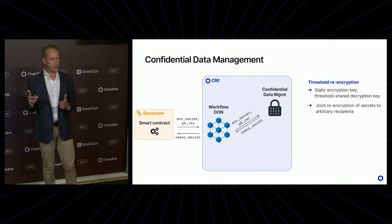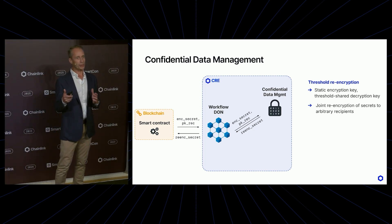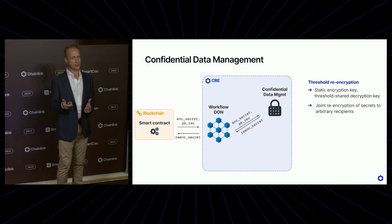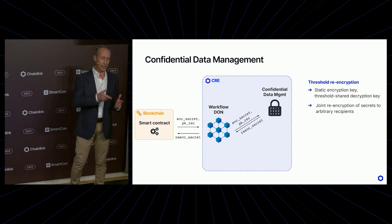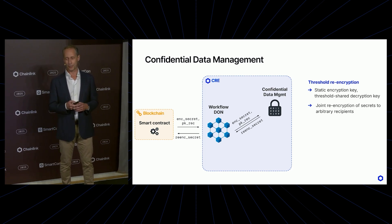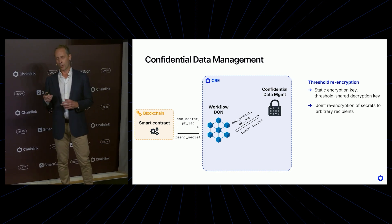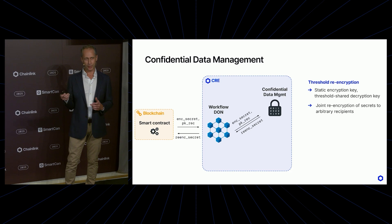Rather, you need a threshold of these nodes to collaborate in order to be able to decrypt a ciphertext. If you're curious how such a key can get generated, check out Philip Schindler's talk later in this session on Chainlink DKG. Now, what the Confidential Data Management capability can do is essentially threshold re-encryption.